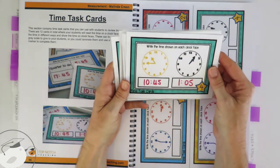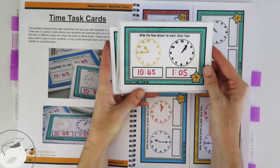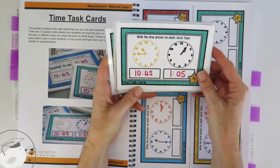So the first ones are the time task cards. These ones are getting your students to practice reading the clock face and writing the time in.